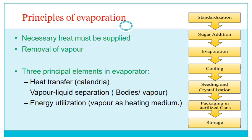There are three principal elements in an evaporator. First is heat transfer, sometimes called the calandria. Second is vapour-fluid separation — that is, separating the vapour from the liquid, done by the evaporator body. Third is energy utilization, where the vapour is used as the heating medium and must be used in the most economical way to reduce the cost of production.